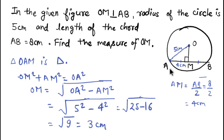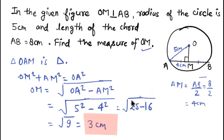So the length of OM is 3 centimeters. That is the solution to this question. We found the measure of OM using the perpendicular bisector property and the Pythagorean theorem. I hope you liked the video — thank you for watching, bye bye and take care.